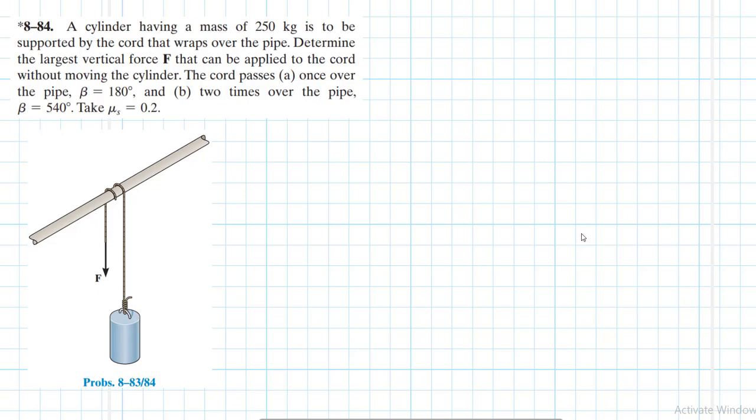Hello, I welcome you all to this interesting screencast. We are going to be solving this engineering mechanics statics problem. It reads: a cylinder having a mass of 250 kg is to be supported by the cord that wraps over the pipe.